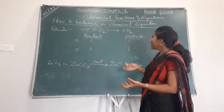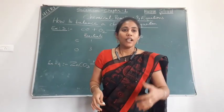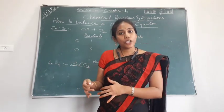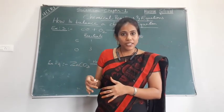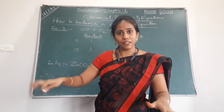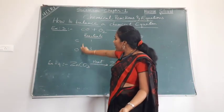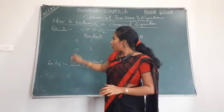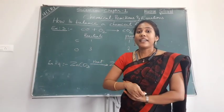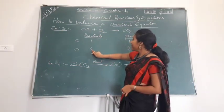This is a simple equation with no polyatomic groups, metals, or non-metals to worry about besides carbon and oxygen. The rule is: polyatomic groups first, then metals, then non-metals, then oxygen and hydrogen. Here, carbon is a non-metal balanced first, then oxygen. Carbon is already balanced, so now come to oxygen — three on one side, two on the other.